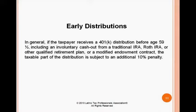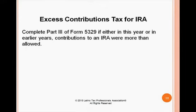You will see 1099-Rs from young people because, generally, if the taxpayer receives a 401K distribution before age 59 and a half — including an involuntary cash-out from a traditional IRA, Roth IRA, or other qualified retirement plan, or a modified endowment contract — the taxable part of the distribution is subject to an additional 10% penalty. There may also be an applicable state penalty. These are recorded in other taxes on the second page of the 1040. Sadly, many people are not informed of these additional penalties, or that the distribution is taxable income.